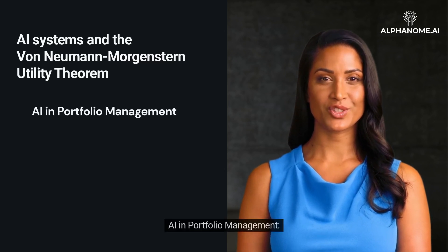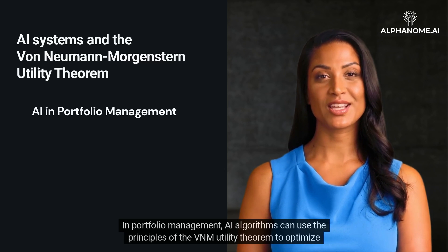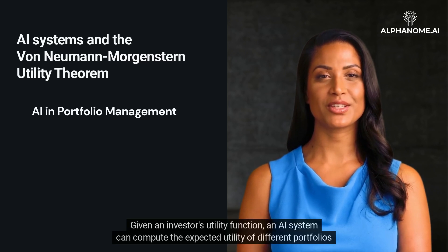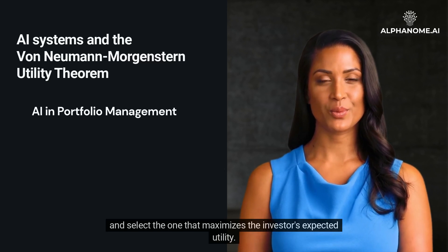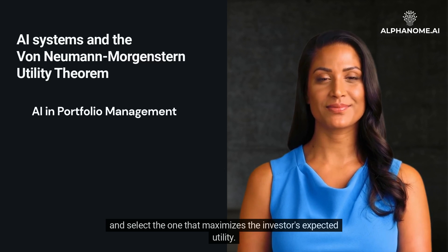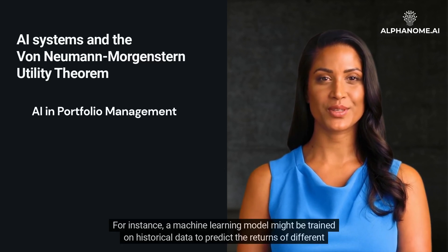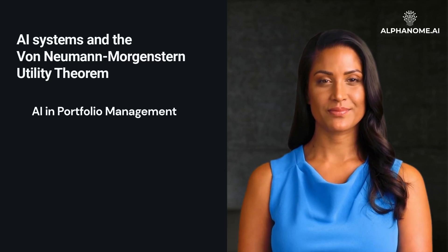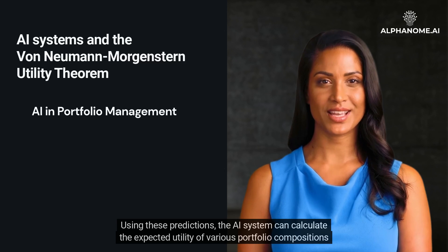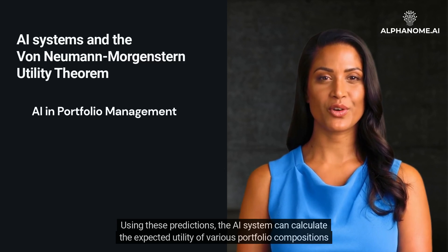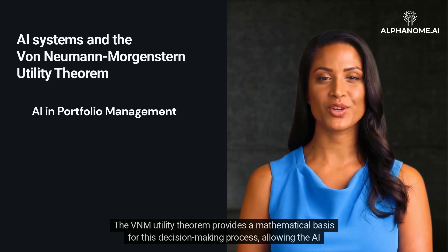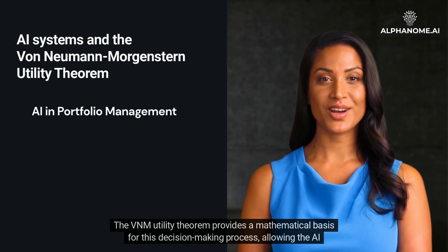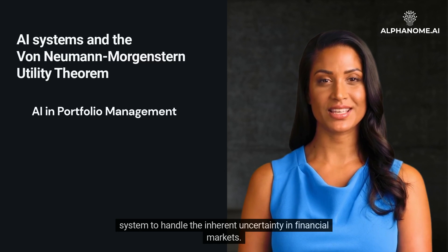AI in Portfolio Management: AI algorithms can use the principles of the VNM Utility Theorem to optimize portfolio selection. Given an investor's utility function, an AI system can compute the expected utility of different portfolios and select the one that maximizes the investor's expected utility. For instance, a machine learning model might be trained on historical data to predict asset returns, then calculate the expected utility of various portfolio compositions to identify the optimal mix of assets.